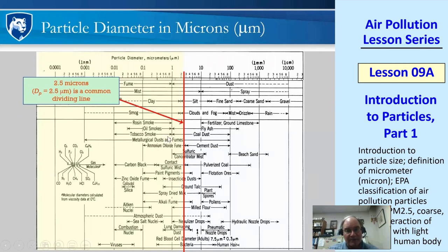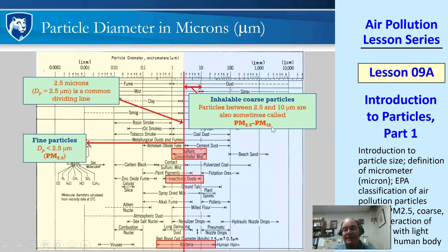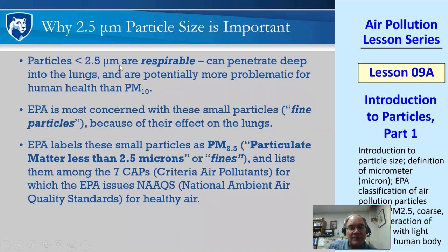Two and a half microns is another common dividing line. Particles centered around that include bacteria, insecticide dust, and sulfuric concentrator mist. Anything less than 2.5 microns is called PM2.5 — fine particles or fines. Anything bigger than 2.5 but less than 10 microns is inhalable coarse particles. Particles less than 2.5 microns are called respirable — they can penetrate deep into the lungs and are potentially more problematic for human health. PM2.5 is also one of the seven criteria air pollutants.